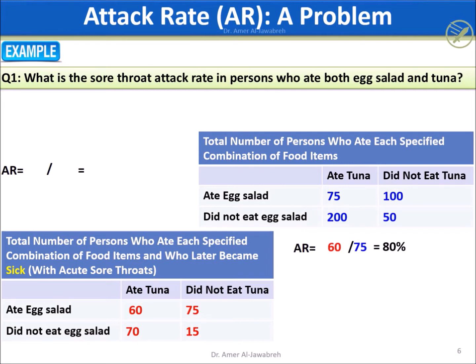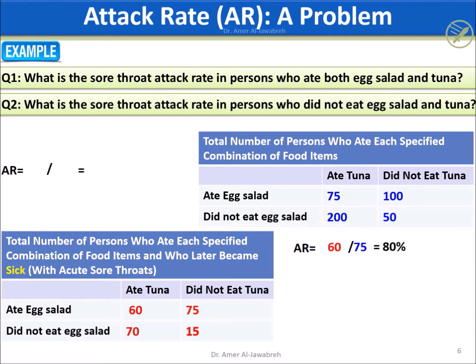The AR for persons who did not eat any of the two foods is 15 from the lower table over 50 total persons who did not eat any of the foods from the upper table. AR equals 0.35 times 100, which equals 35%.